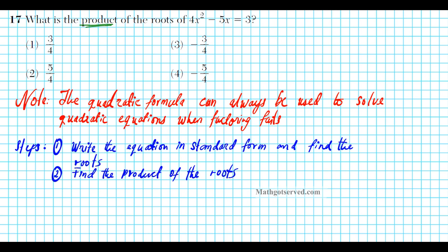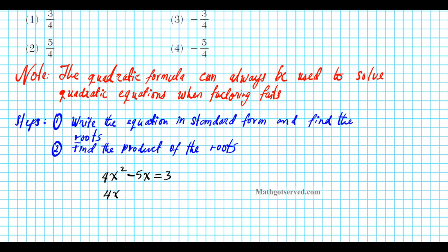So let's put this in standard form. The original equation is 4x squared minus 5x equals 3. We subtract 3 from both sides, giving us 4x squared minus 5x minus 3 equals 0. Using the AC method: AC is negative 12 and B is negative 5. Checking combinations that multiply to negative 12 — none yield negative 5, so this expression is prime. You cannot solve by factoring; you have to use the quadratic formula.